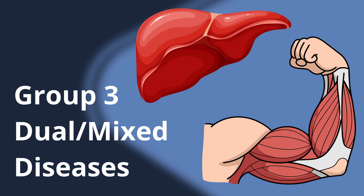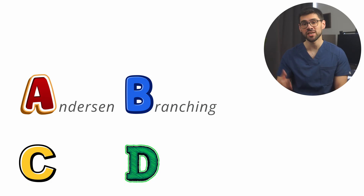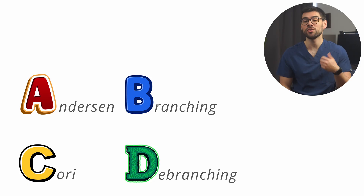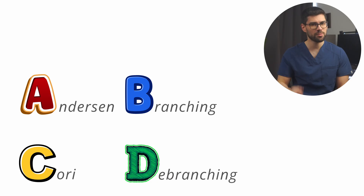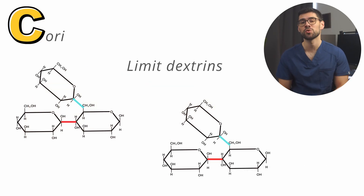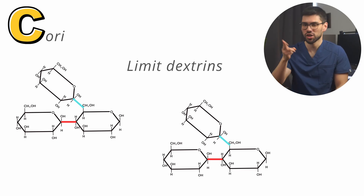Group three: mixed diseases. Finally, we have the mixed ones, which have the easiest lines to remember: A, B, C, D. This stands for A — Anderson disease, caused by the branching enzyme — and C — Cori disease, caused by the debranching enzyme. So A with B, C with D. What we need to remember about these diseases is that they usually present in the first few years of life with severe symptoms — both muscular, typically hypotonia, and hepatic, typically hypoglycemia. In Anderson disease, the buzzword is early liver fibrosis. In Cori disease, the key term to watch for is the presence of limit dextrins — small, incomplete glycogen fragments that still have side branches — because you don't have a debranching enzyme to cut them off.